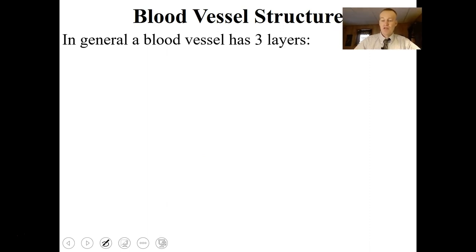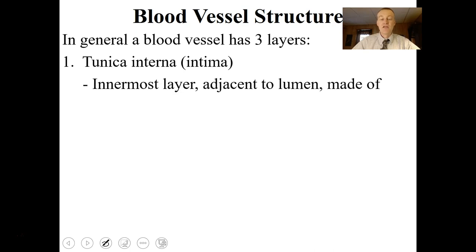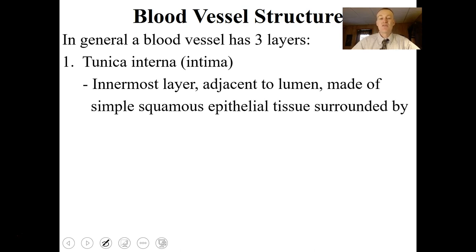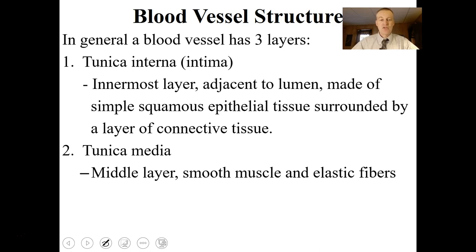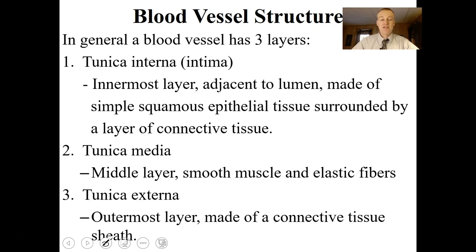In general, blood vessels have three layers — of course capillaries only have one layer. When you look at arteries and veins, you generally have about three layers. The tunica interna (or tunica intima) is the innermost layer, adjacent to the lumen, made of simple squamous epithelial tissue and connective tissue. The middle layer is the tunica media, made of smooth muscle tissue and elastic fibers. The tunica externa is the outermost layer, made of a connective tissue sheath.